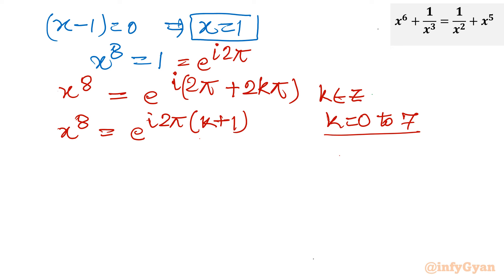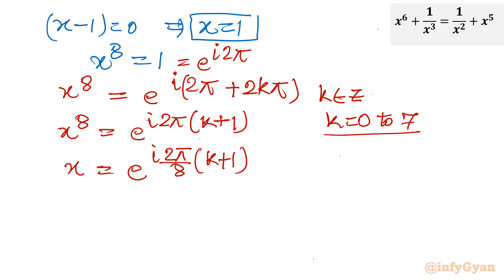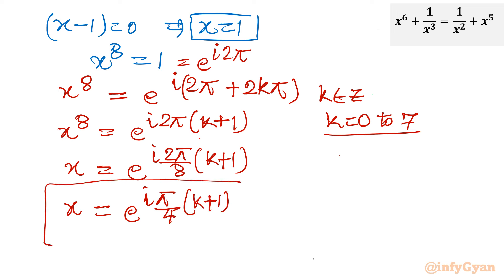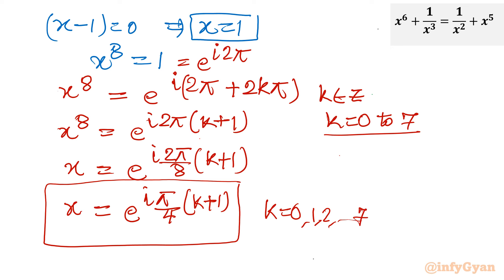Taking the 8th root of both sides: x = e^(i·2π(k+1)/8) = e^(i·π(k+1)/4). By substituting k = 0, 1, 2, … up to 7 we get all 8 solutions.